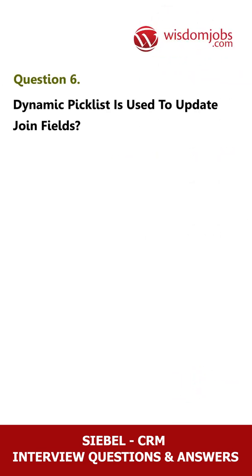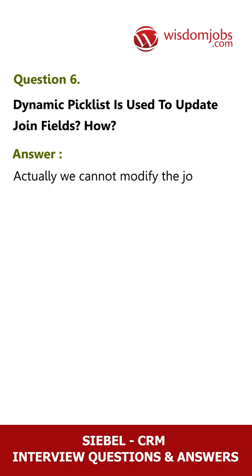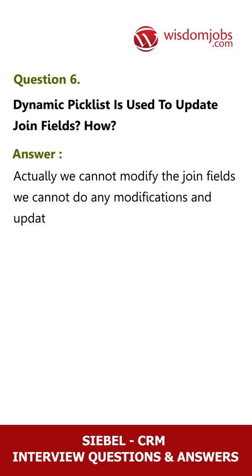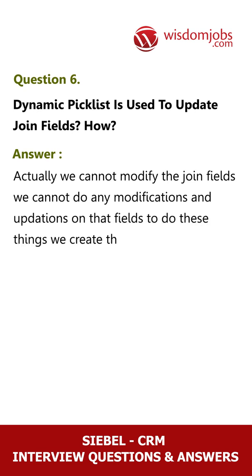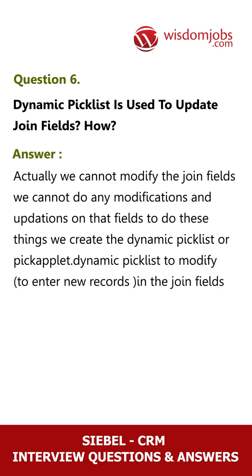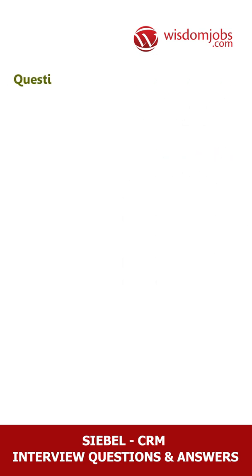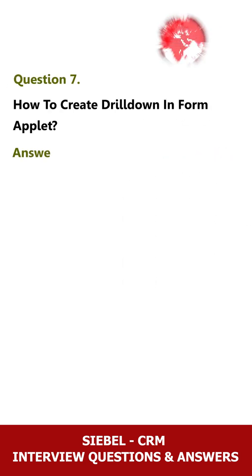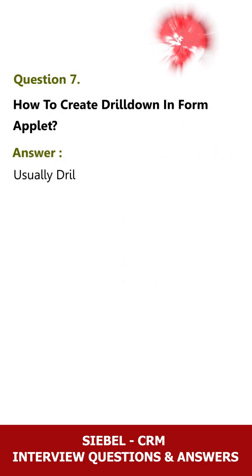Question 6: Dynamic picklist is used to update join fields — how? Answer: Actually we cannot modify join fields directly; we cannot do any modifications and updates on those fields. To do these things we create a dynamic picklist or pick applet. A dynamic picklist is used to enter new records in the join fields.